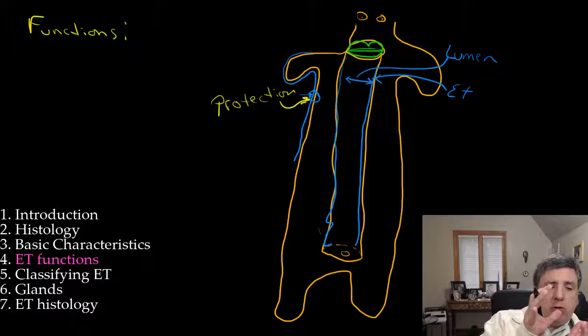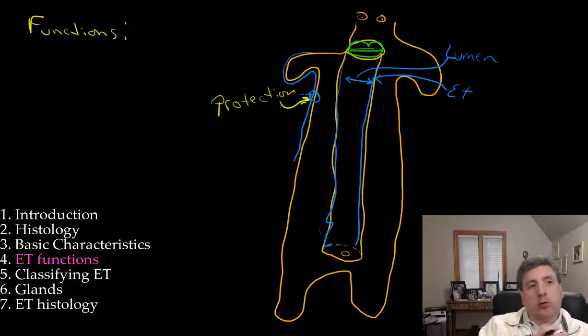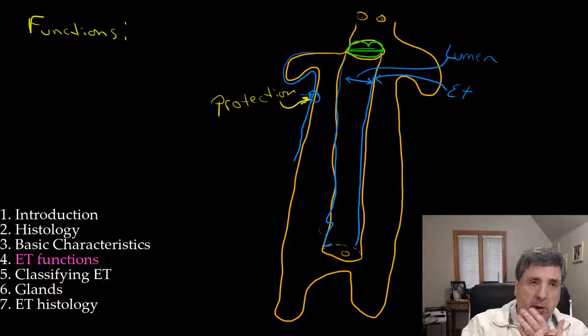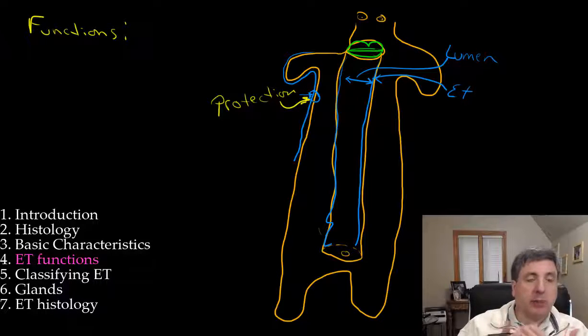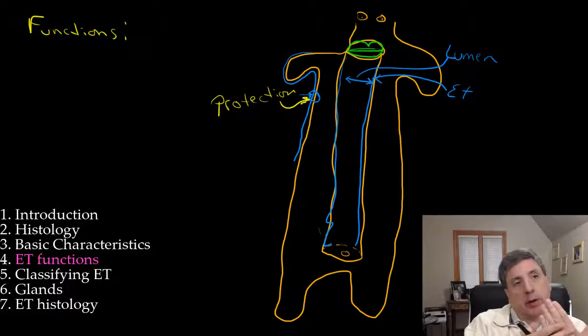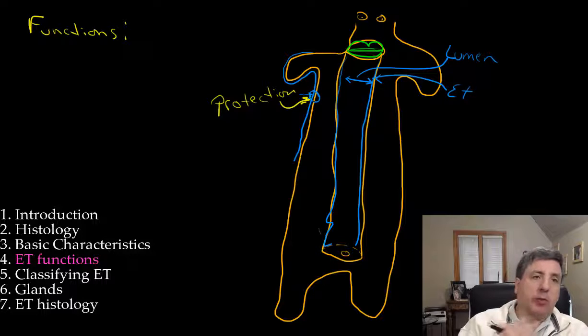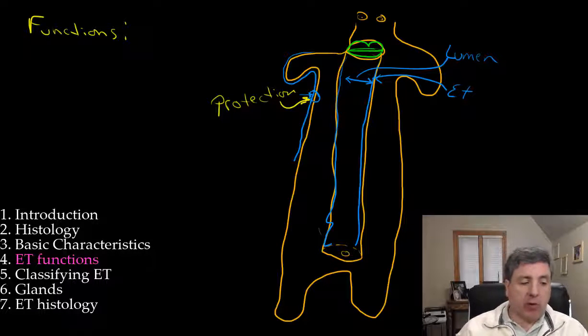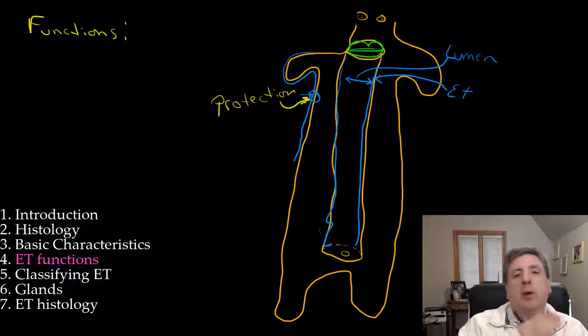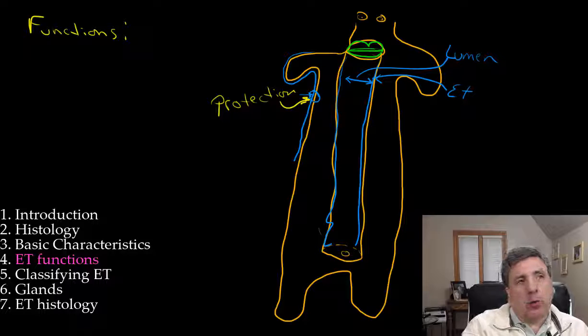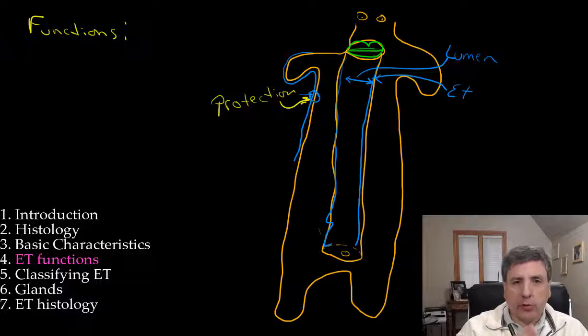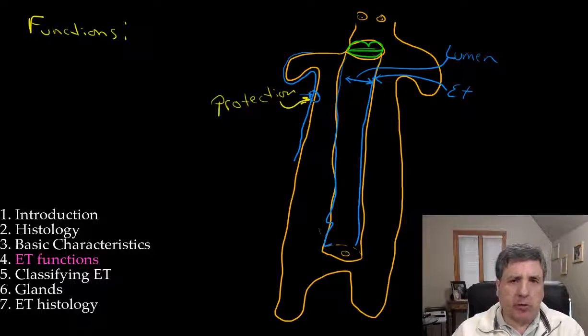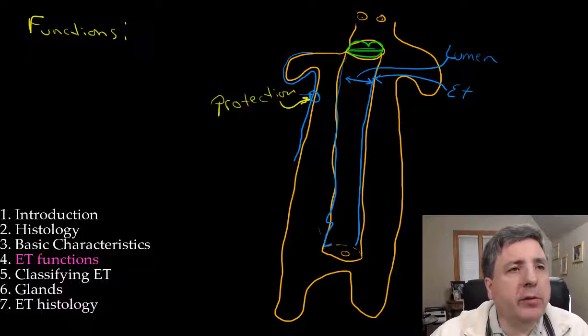When you have protection, you are dealing with protection from both internal as well as external surfaces. It protects you from dehydration, so your skin is helping to retain water in your body and prevents it from leaving at too high of a rate. It's protecting from abrasion, the rubbing on it. It also protects from various other physical, chemical, and biological agents.